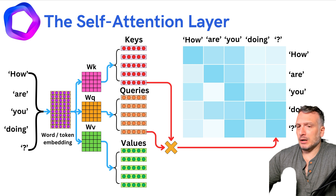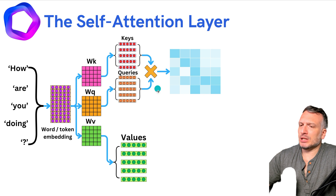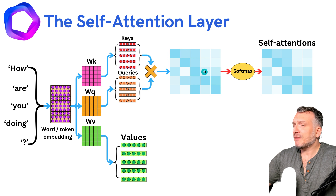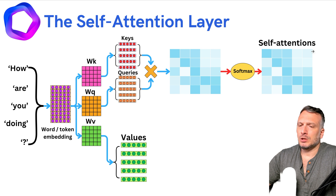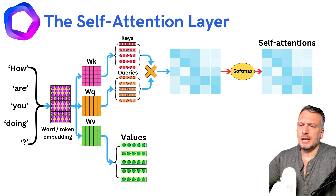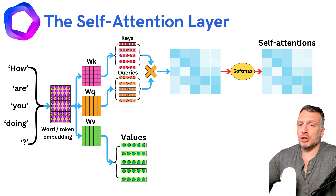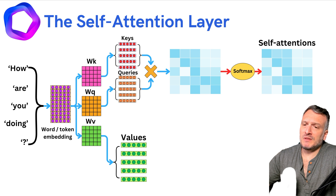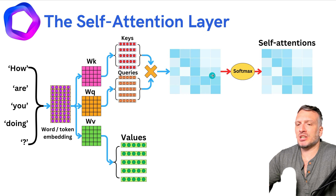Now let's look at a bird's-eye view of what we just covered. We take this matrix of interactions and pass it through the softmax transformation. The softmax transformation maps those interactions into probabilities, so all elements on each row sum to one. This resulting matrix — the normalization of the interaction matrix — is what we call the self-attention. Additionally, this softmax transformation provides some non-linearity in the self-attention layer.